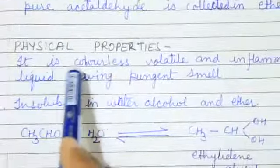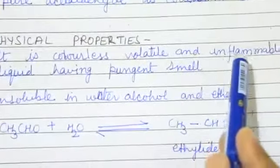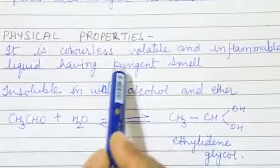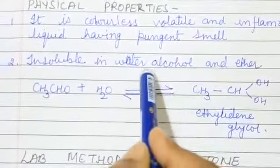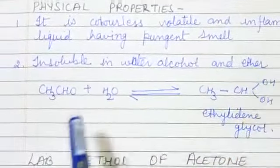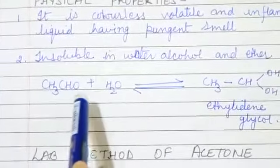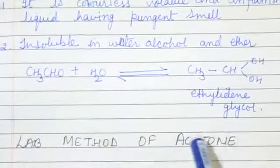Physical properties: it is colorless, volatile and inflammable liquid having pungent smell, soluble in water, alcohol and ether. When acetaldehyde reacts with water, it forms ethylidene glycol. This is ethylidene glycol.